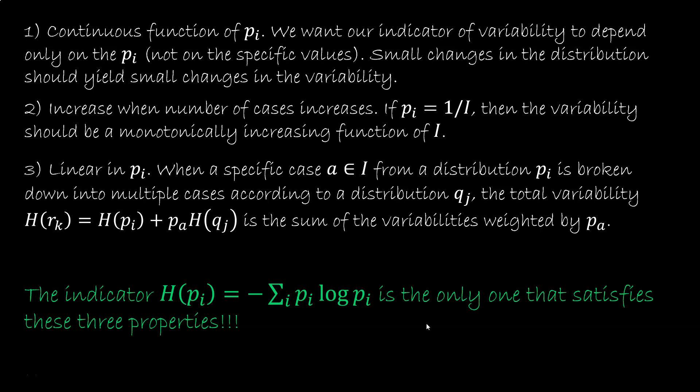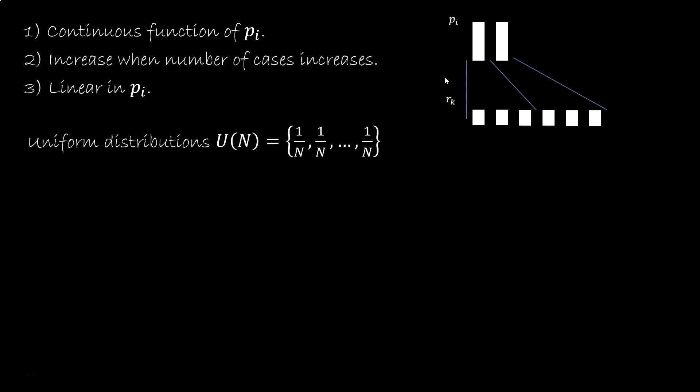Now we have to show that minus P log P is the only indicator that satisfies these conditions. Here we go, first derivation of the series. Pause if I'm going too fast. Let's consider this case. We start with a uniform distribution over n cases, in this example 2. We expand each case with a uniform distribution over m cases, in this example 3. So the first case is expanded in 3 cases, and the second in other 3 cases. We get a distribution of n times m cases, in this example 2 times 3, 6.